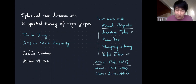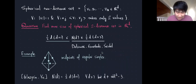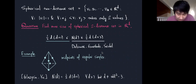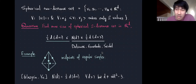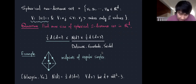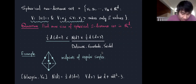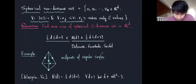I'm going to start with the definition of a spherical two-distance set. A spherical two-distance set consists of points in D-dimensional Euclidean space where these points are distance one from the origin, and the pairwise inner product takes only two values. Spherical means they're on the unit sphere in R^D, and you only get two kinds of distances.